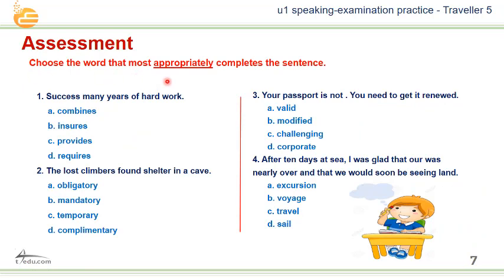Assessment. Choose the word that most appropriately completes the sentence. Number one: Many years of hard work — success. Options: combines, ensures, provides, acquires. Number two: The lost climbers found shelter in a — cave. Options: obligatory, mandatory, temporary, complimentary. Number three: Your passport is not — options: valid, modified, challenging, corrupt.